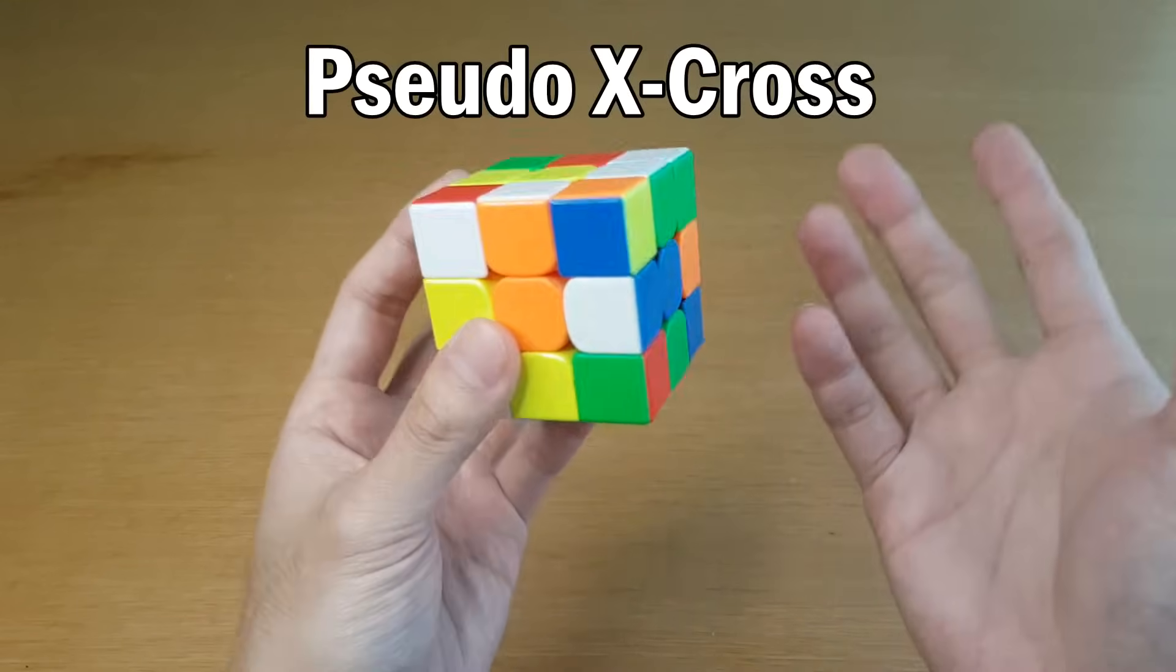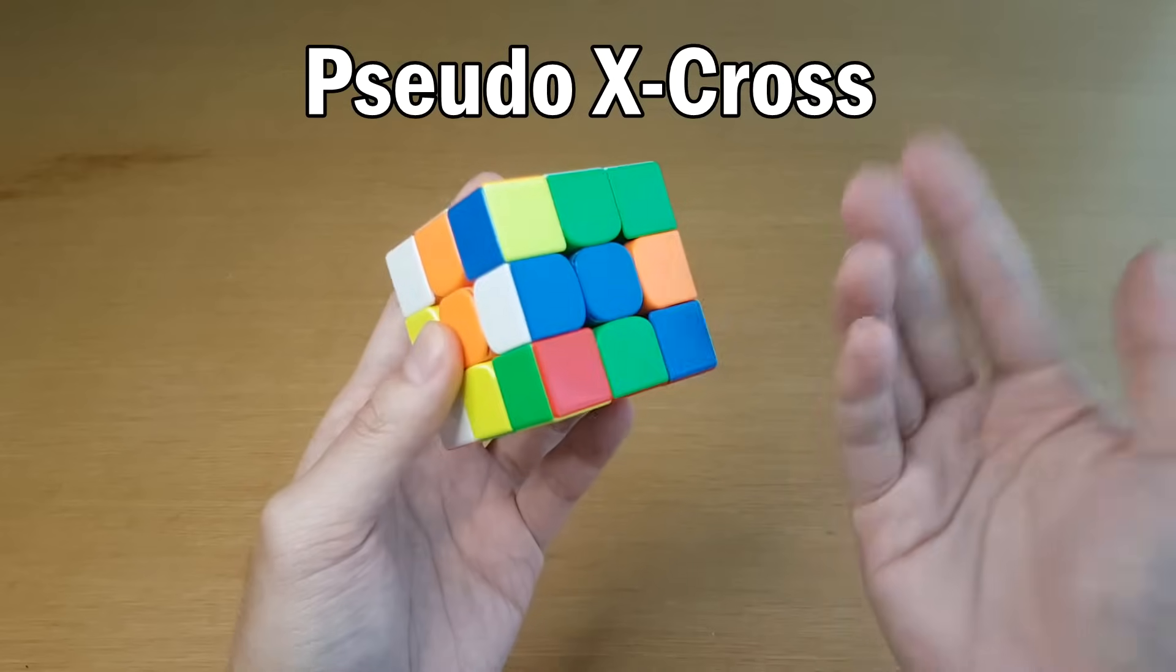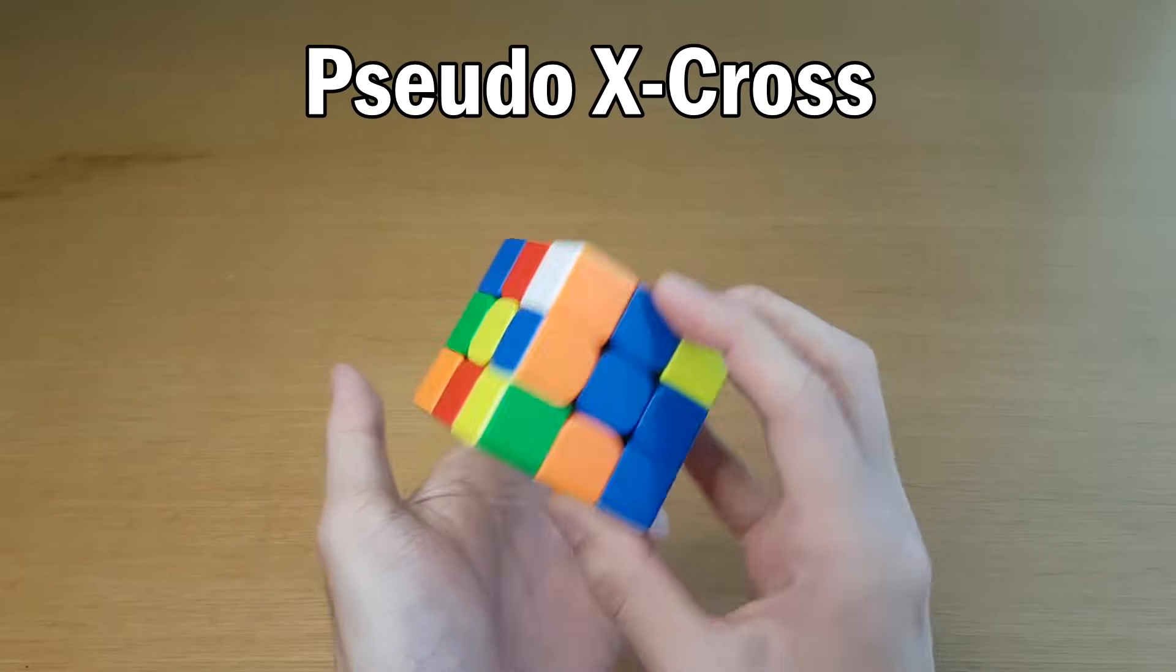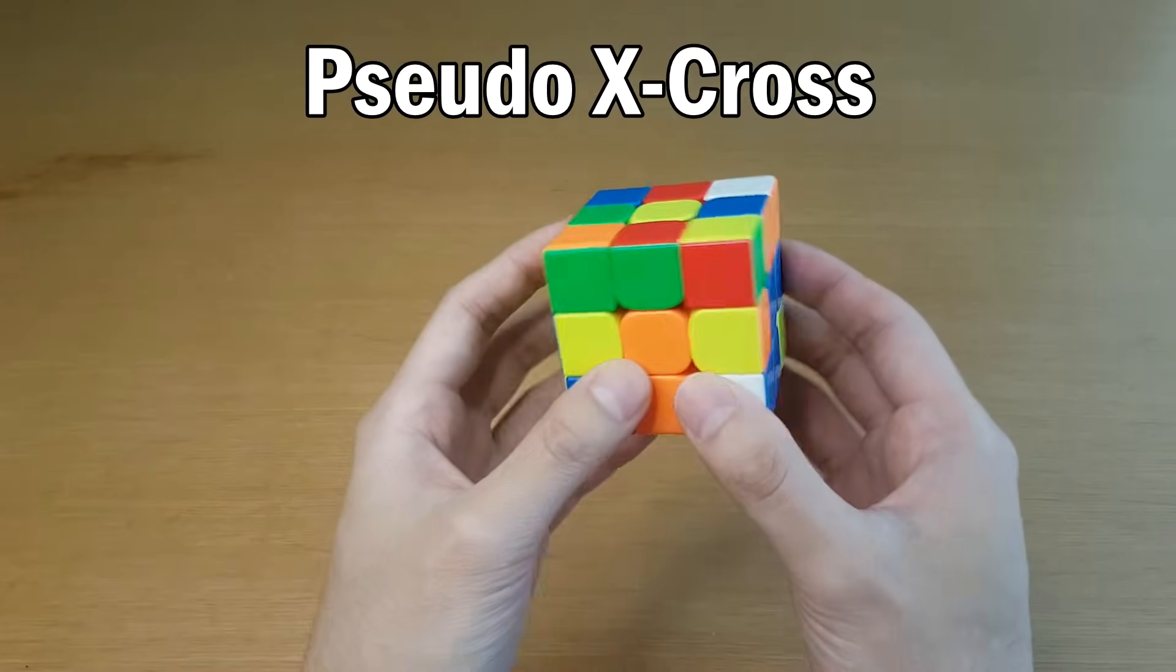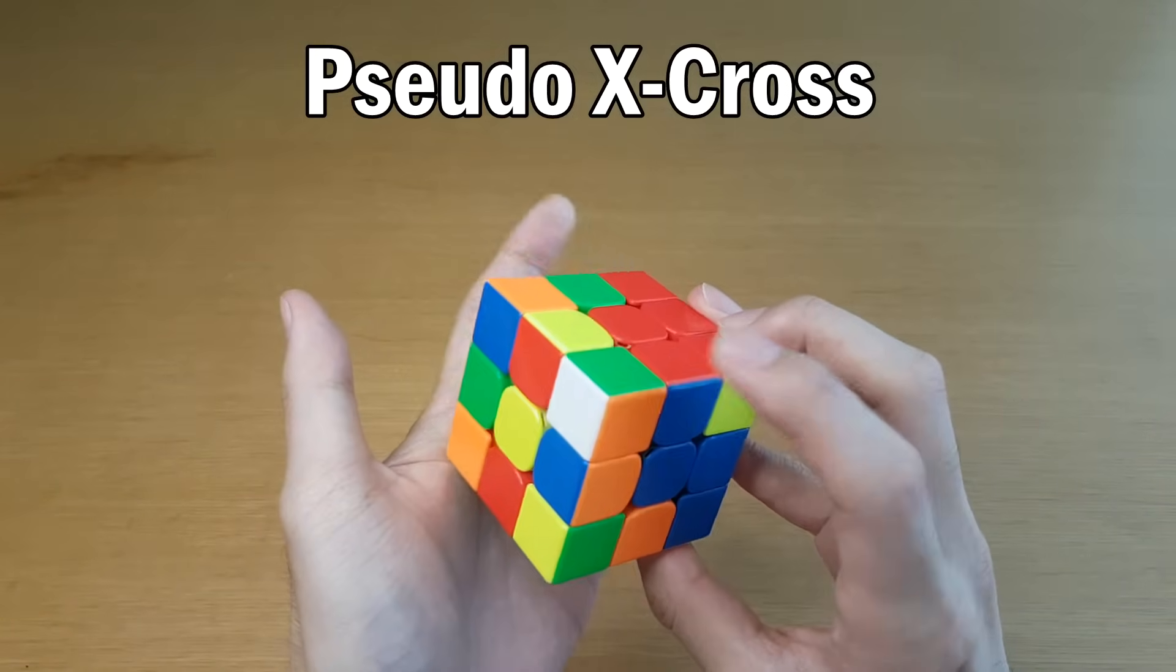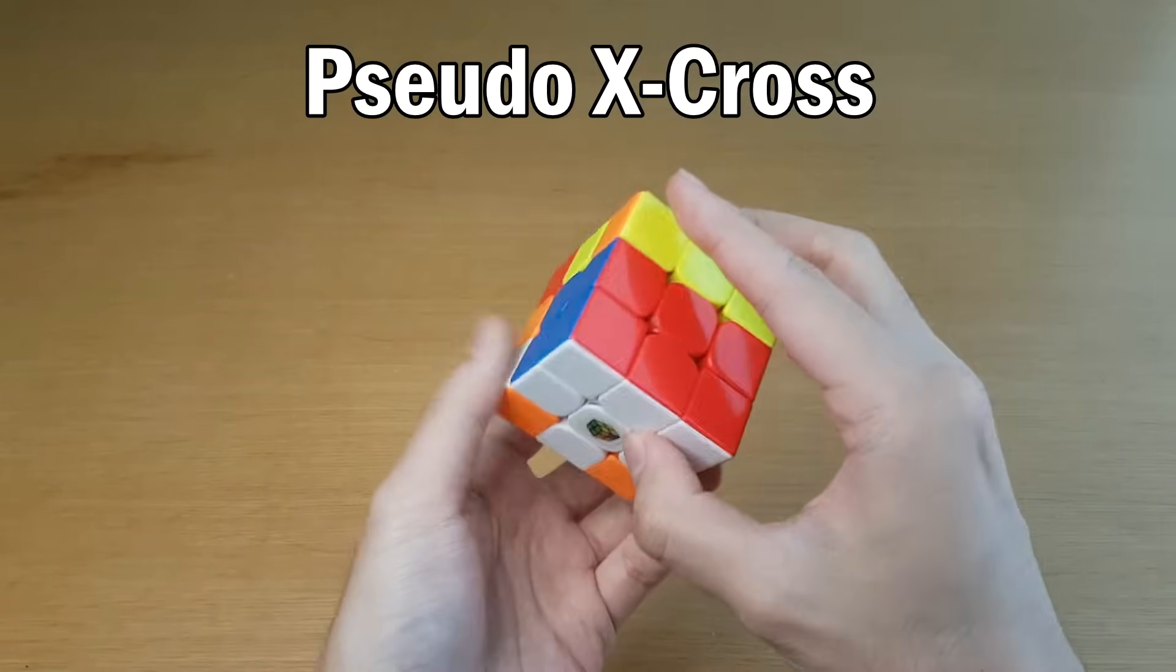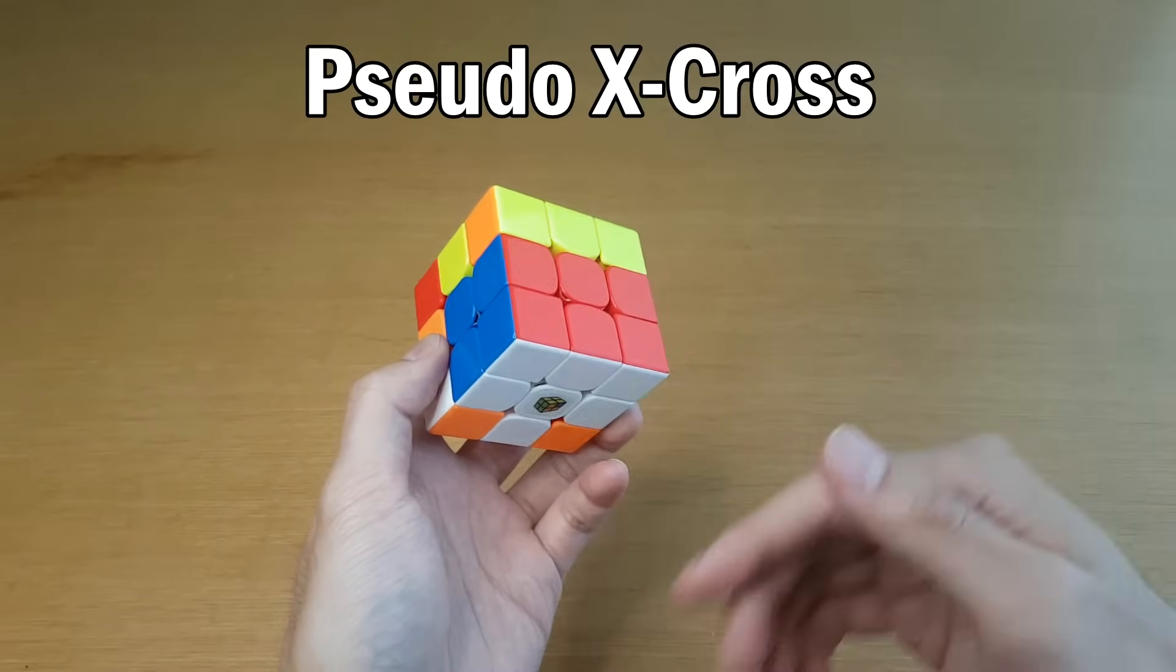Then there's the idea of a pseudo-X cross. So an X cross is when you solve the cross in a way that also solves an F2L pair. Well, why do that when it's so restrictive, when instead sometimes solving the cross just gives you a corner and edge already solved? Maybe you can even add some moves to force that, but that's a little bit more advanced. Basically, if this happens, you can treat that like an X cross and then find the other pieces and pair them and solve them like it's a pseudo-pair. And now you have two pairs solved after just doing one pair, which means you skipped a pair.